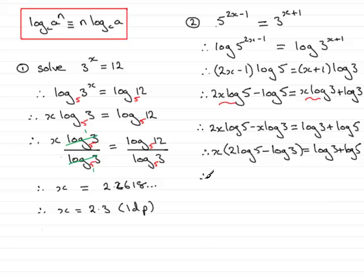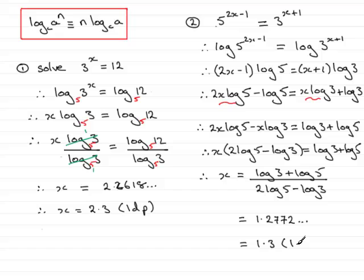And if I do that, that will just leave me with x on this side equals the log of 3 plus log 5 all divided by 2 log 5 minus log 3. So that's essentially it. All you need to do now is just work this out on any calculator. And if you do that, I'll leave it to you to do that and check it. But what you do get is 1.2772 and so on. And if you round that to, say, one decimal place, x is equal to 1.3 to one decimal place.